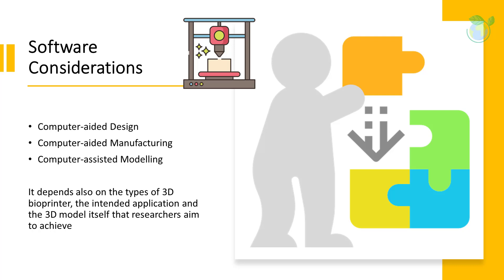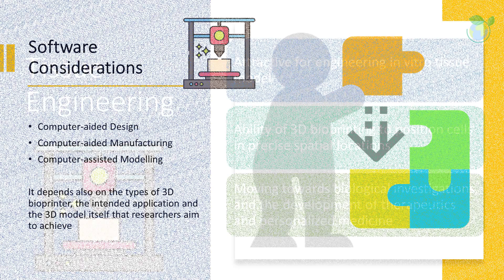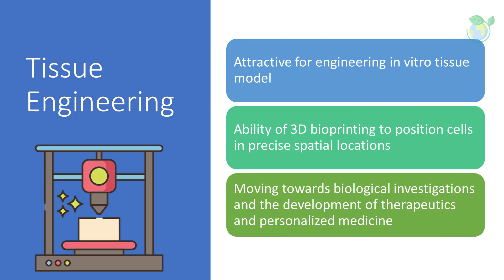It depends also on the types of 3D bioprinter, the intended application, and the 3D model itself that researchers aim to achieve. Tissue model engineering emerged in the late 2000s when engineered models of human tumors started to be used for various in vitro applications, such as biological investigations and the development of therapeutics and personalized medicine. The ability of 3D bioprinting to position cells in precise spatial locations has made the technology particularly attractive for engineering in vitro tissue models that are structurally and functionally relevant.